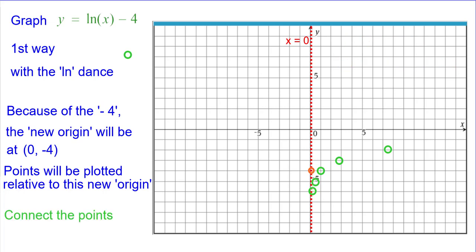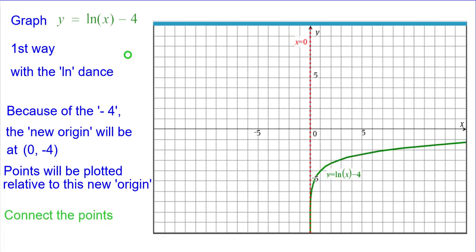We're ready to connect the points. We already have the asymptote and there is y equals natural log of x minus 4.